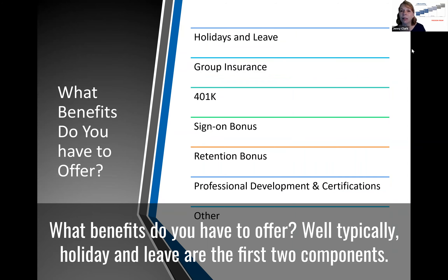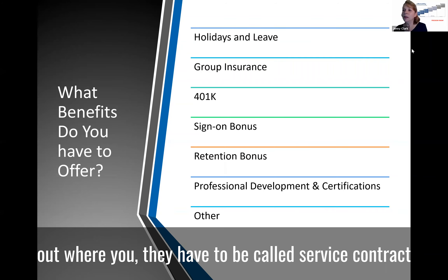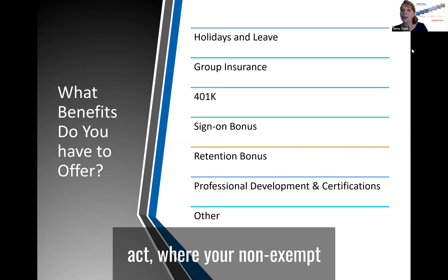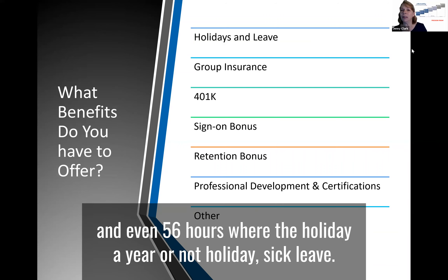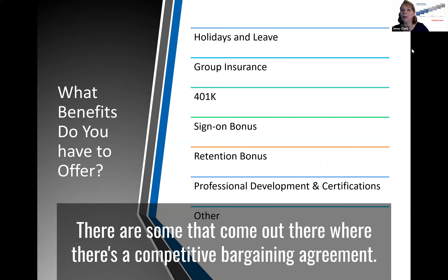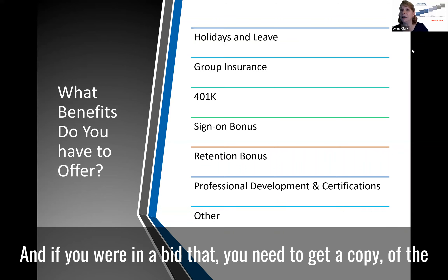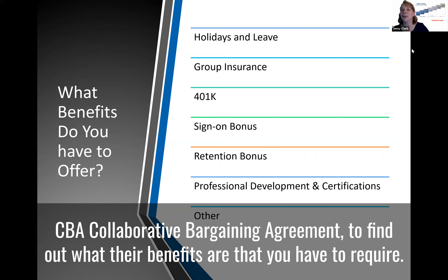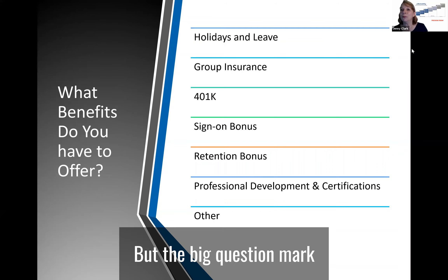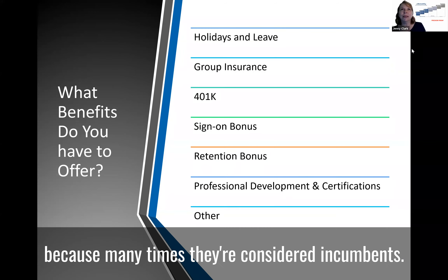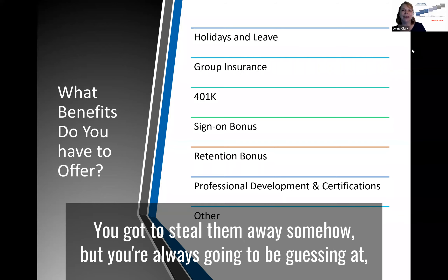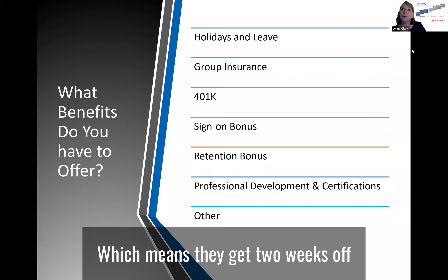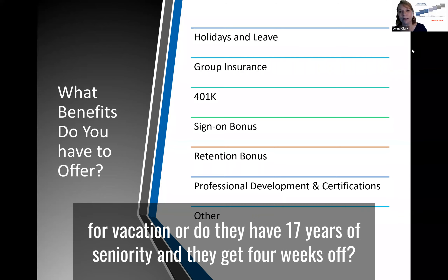When it comes to benefits, holiday and leave are typically the first two components. There are some contracts called service contract act where non-exempt employees must be guaranteed certain holidays, certain values for leave, seniority-based leave, and even 56 hours of sick leave per year. Some contracts have a collective bargaining agreement, and if you're bidding on those, you need to get a copy of the CBA to find out what benefits are required. A big question mark is that you often don't know the seniority of the incumbent employees you may be hiring — someone with one year of seniority gets two weeks' vacation, while someone with 17 years gets four weeks, which affects your pricing.